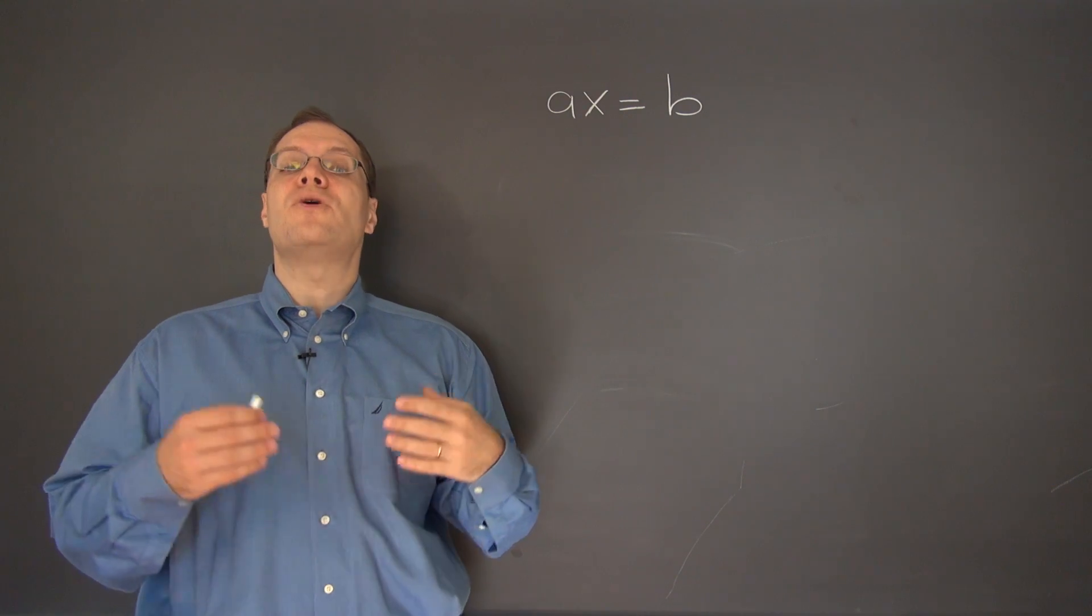ax equals b. That's the simplest possible linear system. It has just one equation and one unknown, x. A and b are just some numbers.